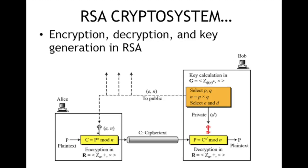Given a plain text p, the ciphertext is calculated as p to the power e mod n. This ciphertext is transferred to the receiver, and then the plain text can be recovered as c to the power d mod n.